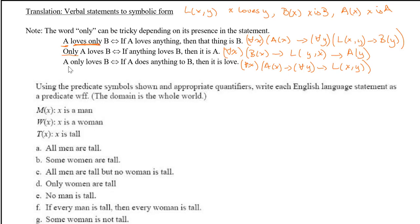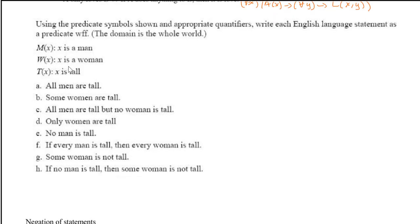Now let's see different examples using predicate symbols and appropriate quantifiers. We'll write English language statements as predicate logic formulas where the domain is the whole world. For 'All men are tall': if there is anything in the world and it is a man, it implies it's tall — so for all x, M(x) implies T(x).